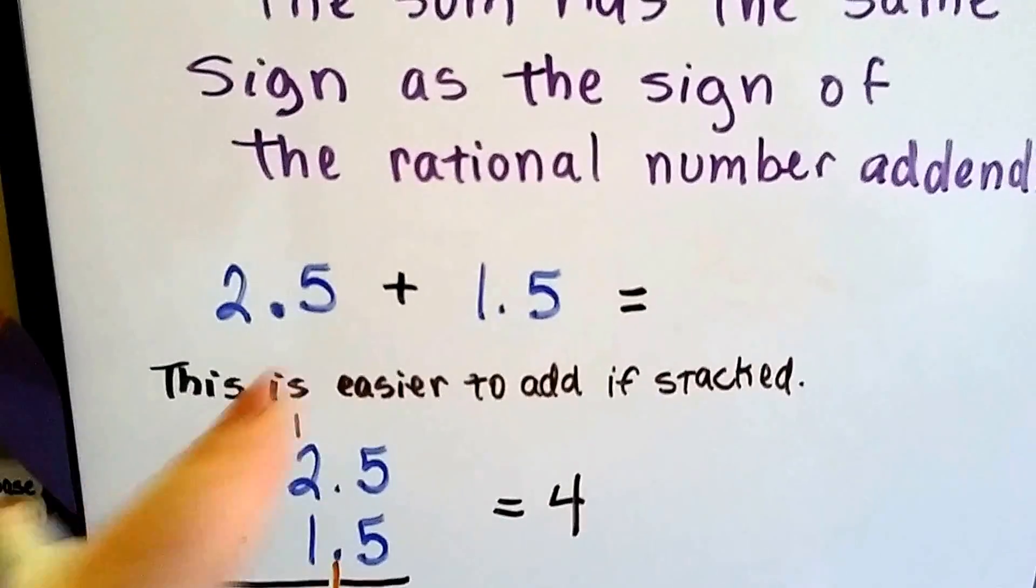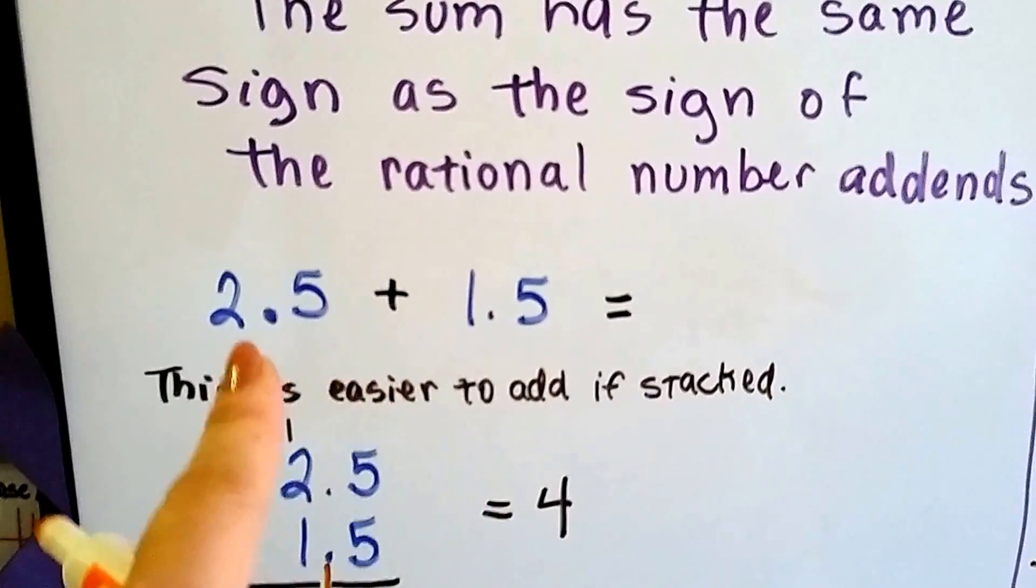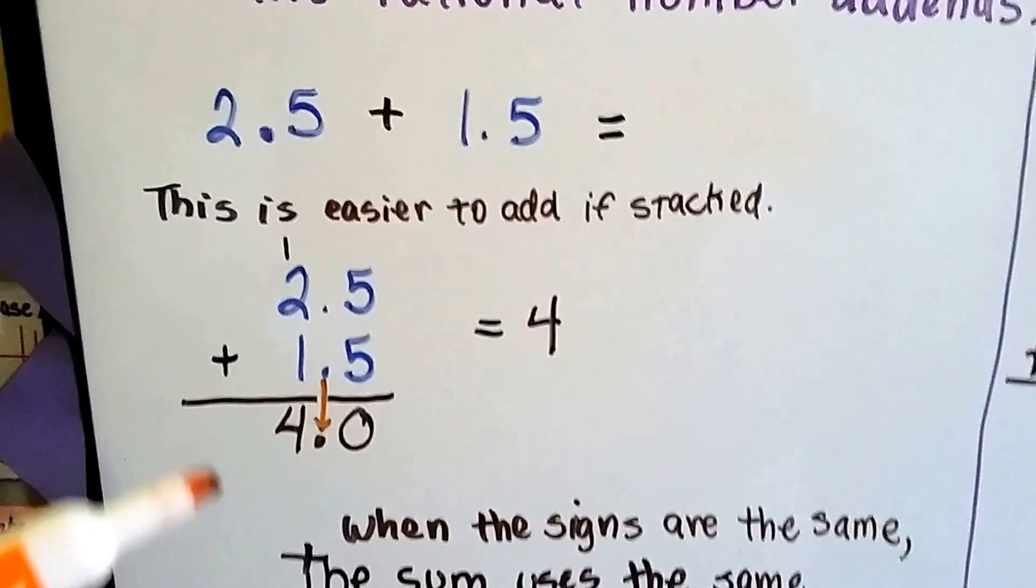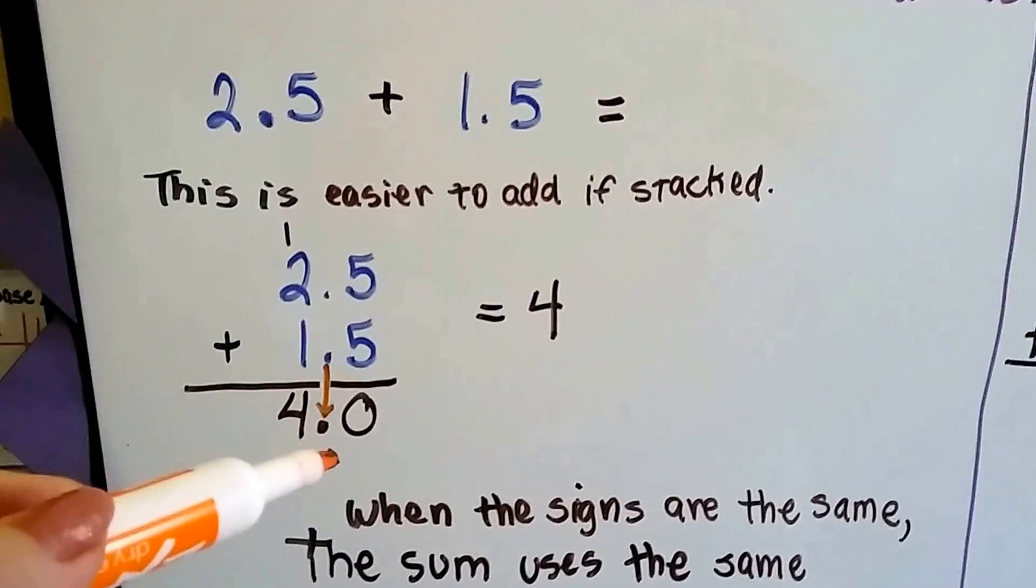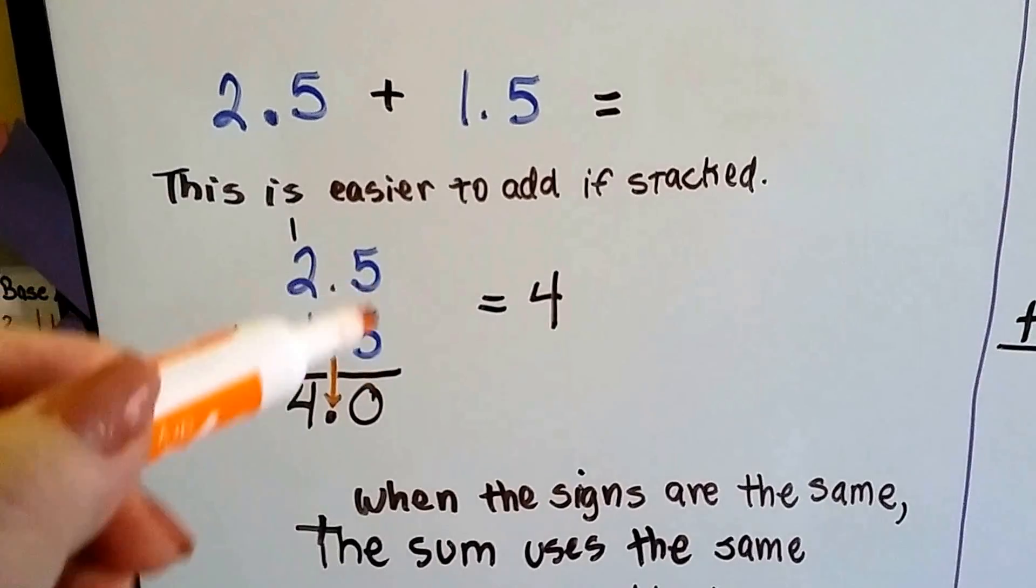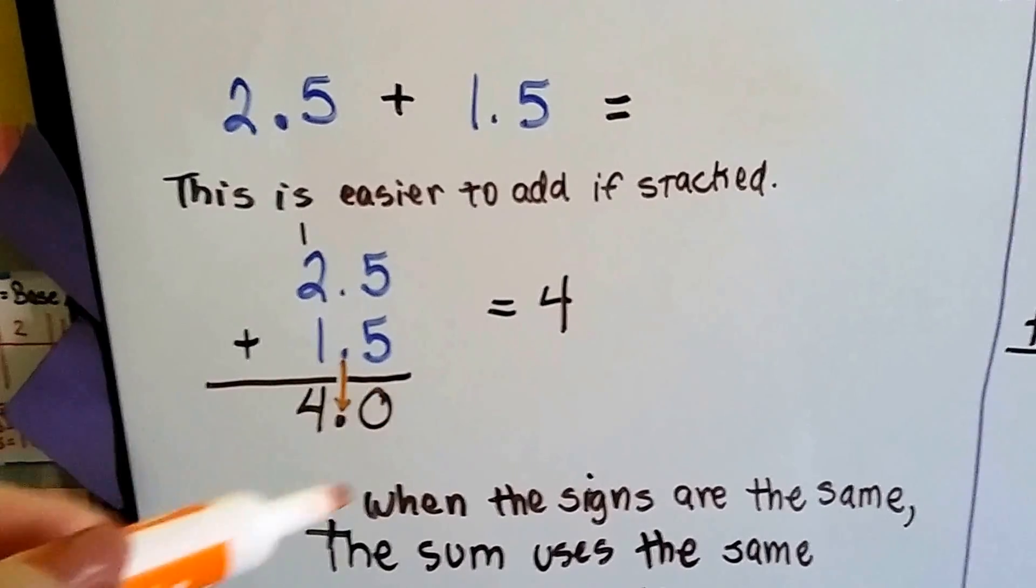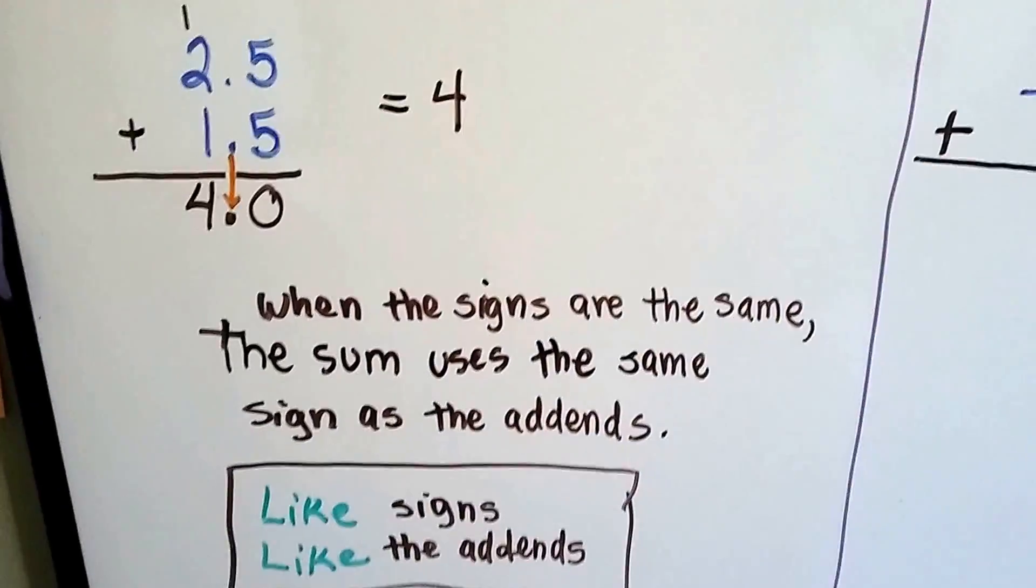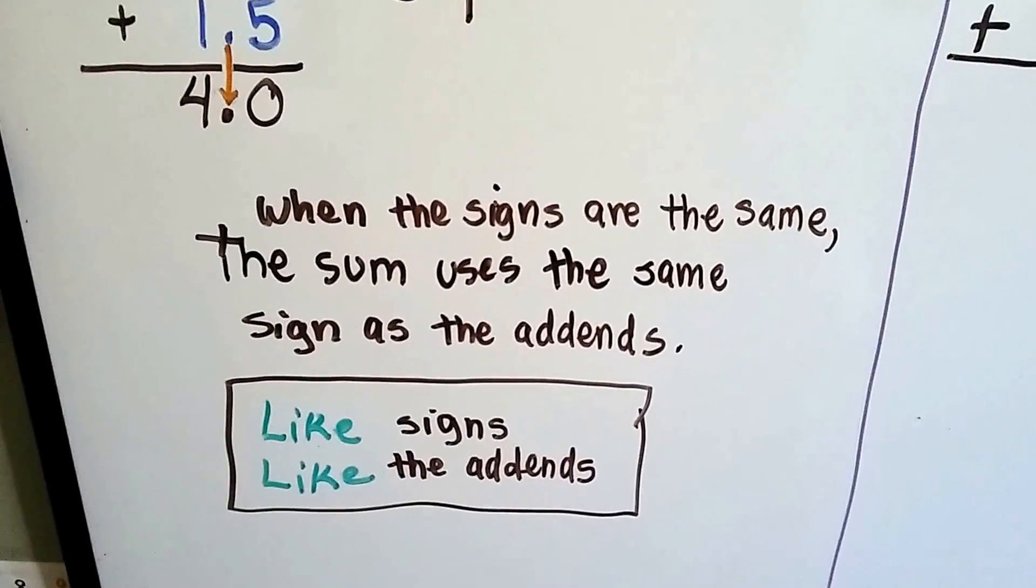So here's two rational numbers, 2.5 and 1.5, written in decimal form. It's easier to add these if they're stacked. If you remember how to add decimals, we drop the decimal straight down, we add these, 5 plus 5 is 10, we carry the 1, put the 0 down, and this is 4, so our answer is 4. And when the signs are the same, the sum uses the same signs as the addends.